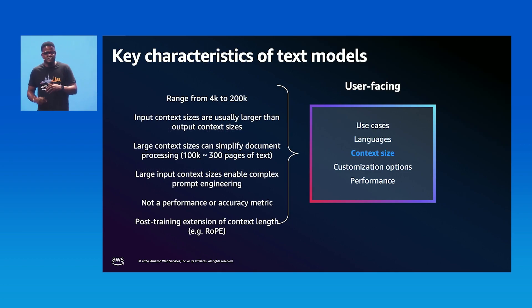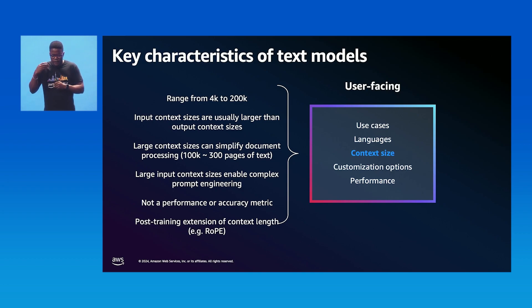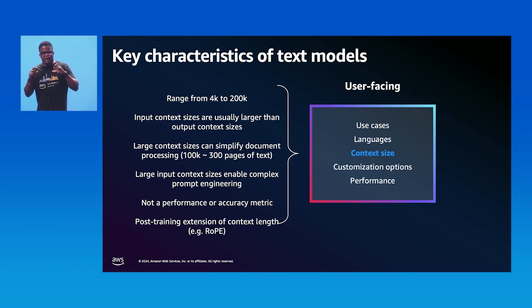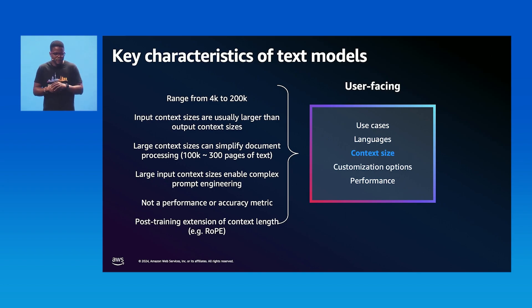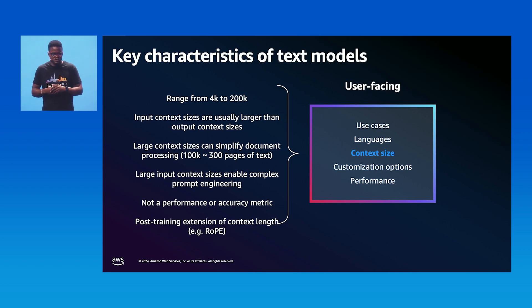The next user-facing property is the model's context size — the maximum input sequence length the model can handle, typically ranging from 4K to 200K tokens. A larger context size enables handling large documents and passing longer text for multi-page processing. It also enables more complex prompt engineering approaches. However, larger context sizes impact latency and throughput, so we need to evaluate carefully based on context size and our use case. You can also explore approaches like ROPE that extend the context size limit beyond the initial training.